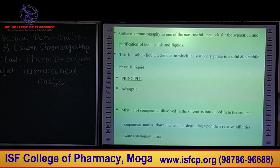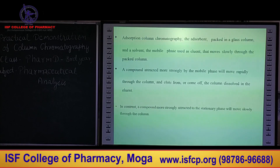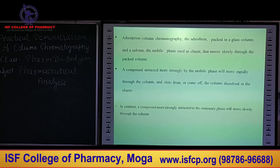The mixture of components is dissolved in the mobile phase or the solvent and introduced into the column. The components move down the column depending upon their relative affinity towards the stationary phase. Adsorption column chromatography uses an adsorbent packed in a glass column and uses a mobile phase which is a liquid as an eluent. The compound having more affinity for the mobile phase will move rapidly through the column and elute first, while compounds with more affinity towards the stationary phase will elute later.